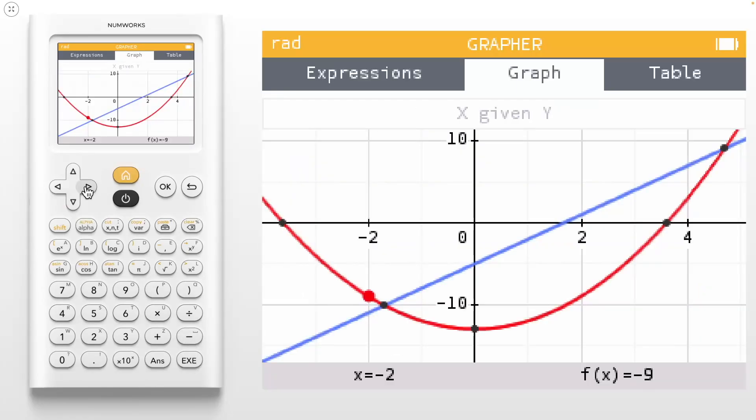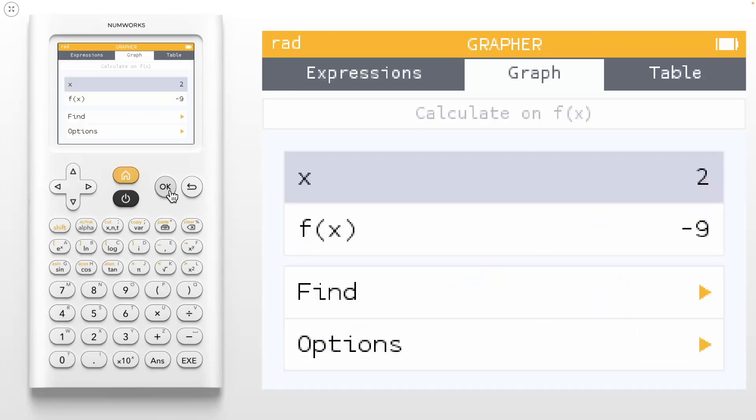Let's jump to f of x equals negative 9. Here you can see f of x equals negative 9 at negative 2. Is that the only place where f of x equals negative 9? Use your right arrow to find the other value. Press the back arrow to get out of this and OK again to get back into the menu.